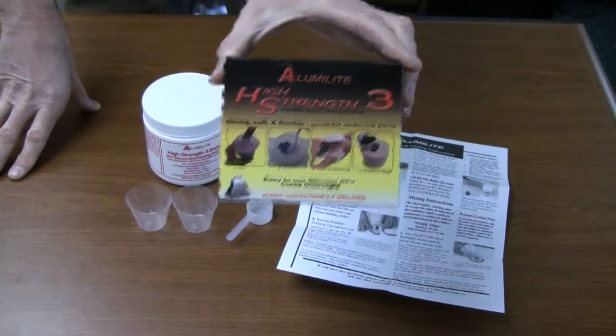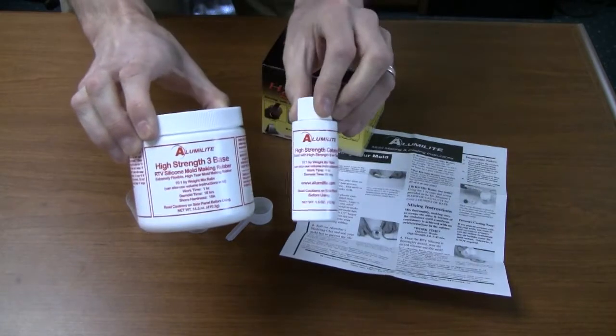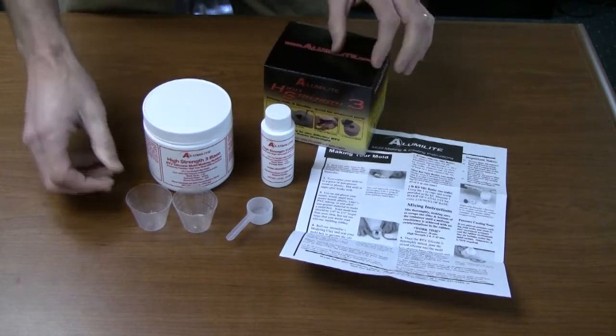I'd like to introduce you to Alumilite's High Strength 2 and High Strength 3 silicone rubber. The materials are a two-part system, a base and a catalyst.